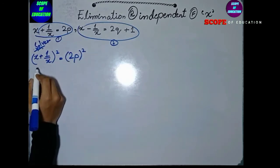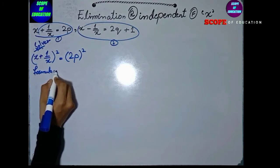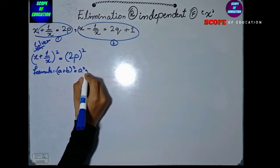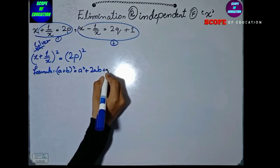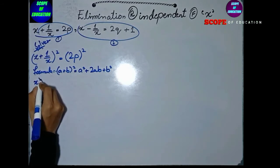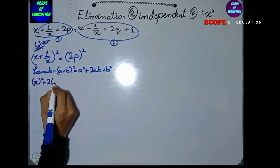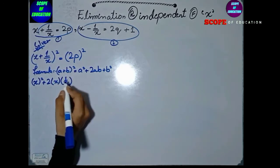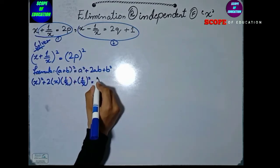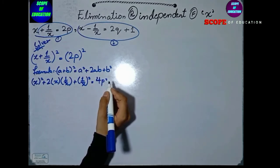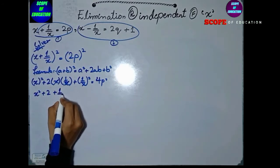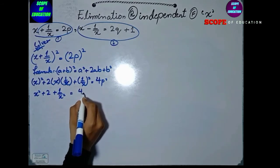We have the formula fit: a plus b whole square is equals to a square plus 2ab plus b square. So x square plus 2 times x times 1 upon x plus 1 upon x whole square is equals to 2p square, means 4p square. Then x and x cancel, giving x square plus 2 plus 1 upon x square equals 4p square.